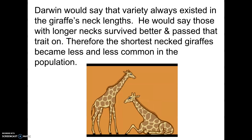Darwin would say about the giraffes: there was a variety of neck lengths already in giraffes — they didn't get longer necks by stretching them. Genetically, some had longer necks, some had shorter necks. But if the environment they were living in favored having a long neck — maybe there was a drought for several years and the best leaves were high up in the trees — then the ones with shorter necks were probably not going to survive and reproduce. So they wouldn't pass on the gene for a short neck. The ones with longer necks would pass their genes on, and over time you'd end up with populations of giraffes where there aren't any short-necked ones anymore — because of who got to mate and pass their genes on.